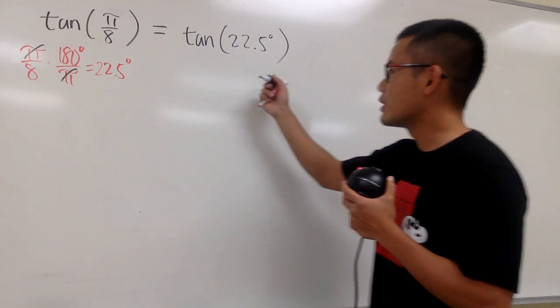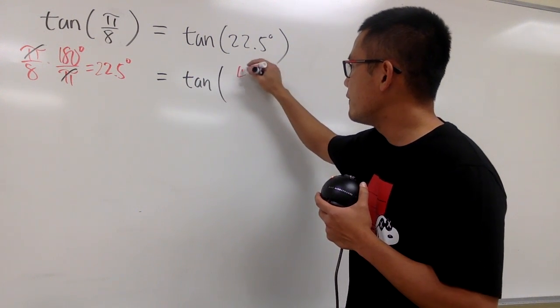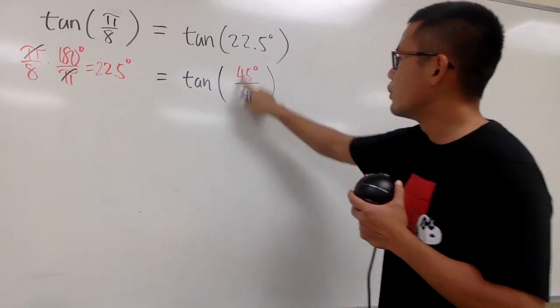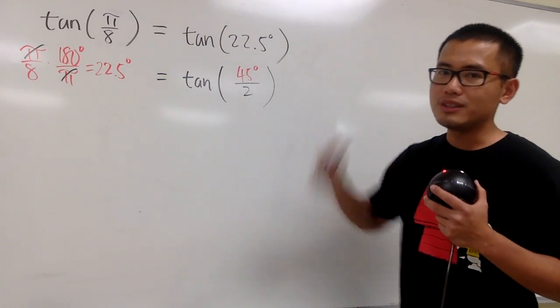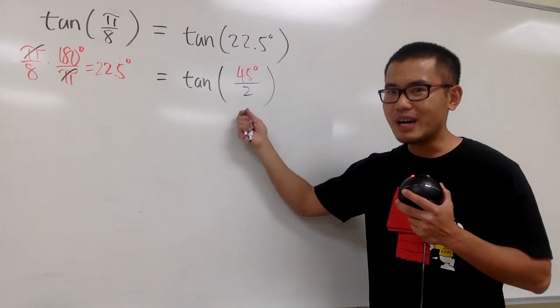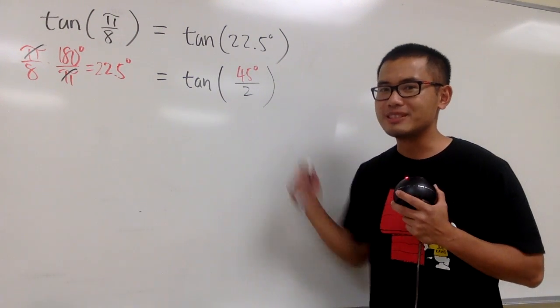Let me put this down: this is the same as tangent of 45 degrees over 2, which gives us 22.5 degrees. With that being said, we can utilize the half-angle formula for tangent to help us out.